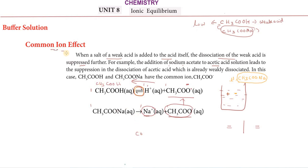The Common Ion Effect: the simple concept is that when we add a salt to a weak acid, the dissociation of the weak acid becomes less. Adding the salt reduces dissociation further. We can already see CH3COO- in the solution, so adding more of it suppresses the dissociation of the weak acid.